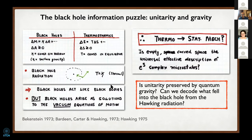What's strange is that the black holes arise as solutions to the vacuum equations of motion. We're well used to the idea in physics that if you want a unitary description of thermodynamics, you need to uncover the underlying statistical physics. So really the question for about 50 years has been: in what sense is empty curved space—what black holes are—the universal effective description of about e to the entropy complex microstates?